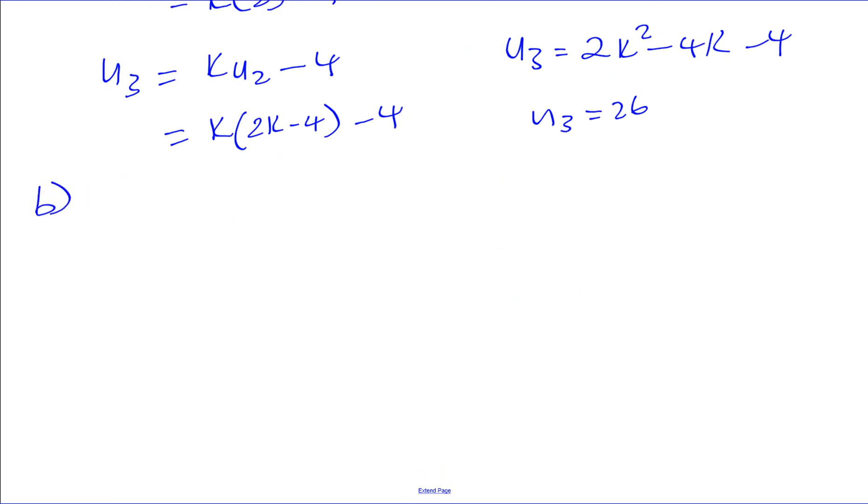So we can say that 2k squared minus 4k minus 4 equals 26. We can divide everything by 2, so we've got k squared minus 2k minus 2 equals 13. We can subtract 13 from both sides to make it equal 0 because there's a quadratic here. So it's going to be minus 15.